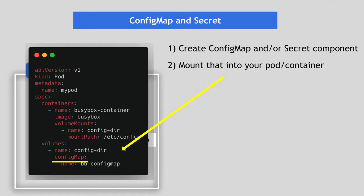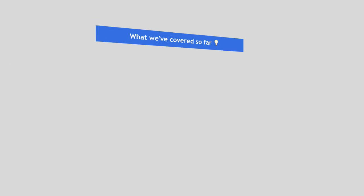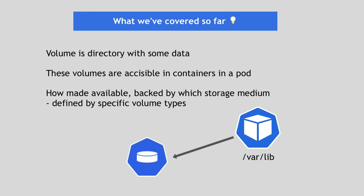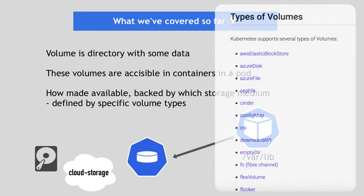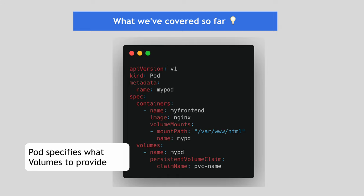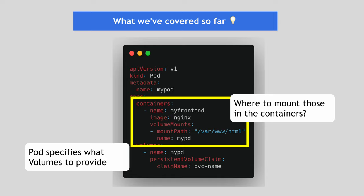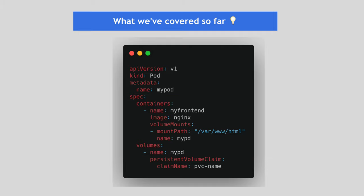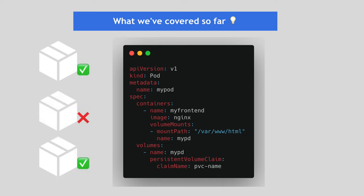To quickly summarize what we've covered so far: at its core, a volume is just a directory, possibly with some data in it, which is accessible to the containers in a pod. How that directory is made available, what storage medium backs it, and the contents are defined by the specific volume type you use. To use a volume, a pod specifies what volumes to provide in the specification volumes attribute, and inside the pod you decide where to mount that storage using the volume mounts attribute inside the container section.